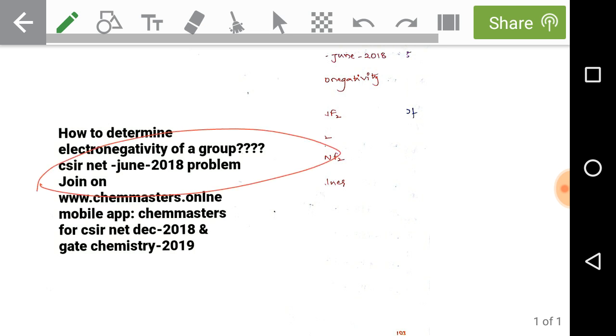We are discussing this topic because we have a problem on electronegativity of a group in CSIR NET June 2018. Join ChemMasters.online or download the mobile app ChemMasters from Google Play Store and sign up for courses on CSIR NET December 2018 and GATE Chemistry 2019 to study from your home or while doing a job.